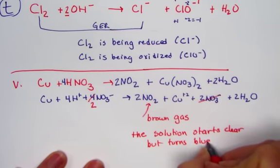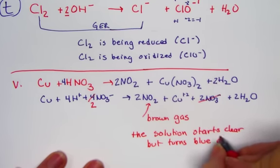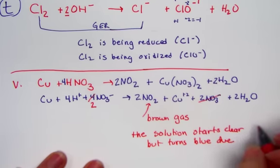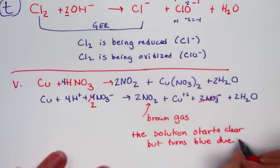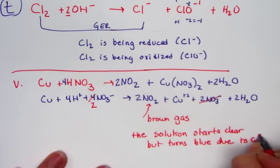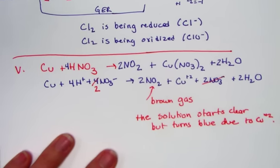Anytime you have aqueous copper ion in solution, you can count on that being that blue color indicating the copper has now dissolved due to Cu plus two. So, we see a brown gas and the solution turning from clear to blue.